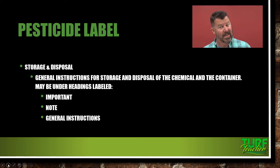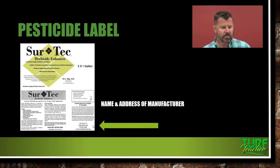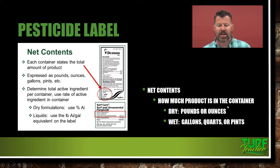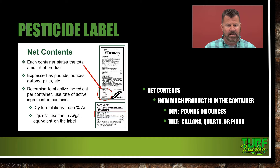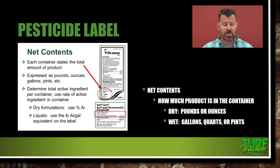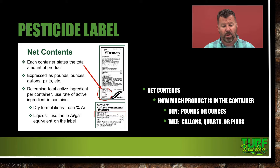Net contents tells you how much product is in the container — in pounds or ounces if dry, and gallons, quarts, or pints if liquid. For example, Demon EC (emulsifiable concentrate insecticide) is one pint. The active ingredient common name is chlorpyrifos, with a complex chemical name, and the trade name is Demon EC. So the basic parts of the label again: brand name/trade name, active ingredient common name, and full chemical name.